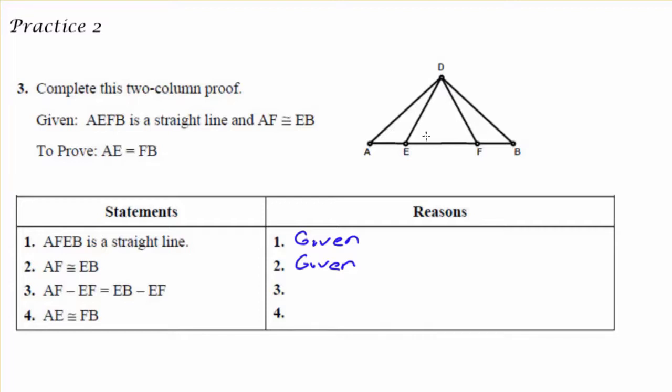Now looking at my third statement, it seems that from AF and EB, from both of those, I am subtracting EF. Now since I am subtracting the same thing from two things that are both equal, I can denote that and again use axiom 2 because I'm subtracting an equal quantity from two quantities that are already equal.